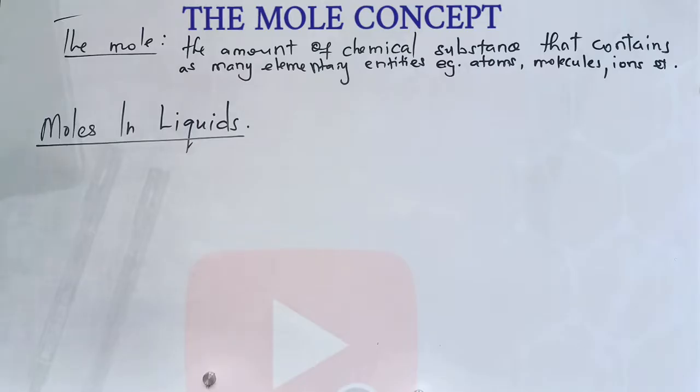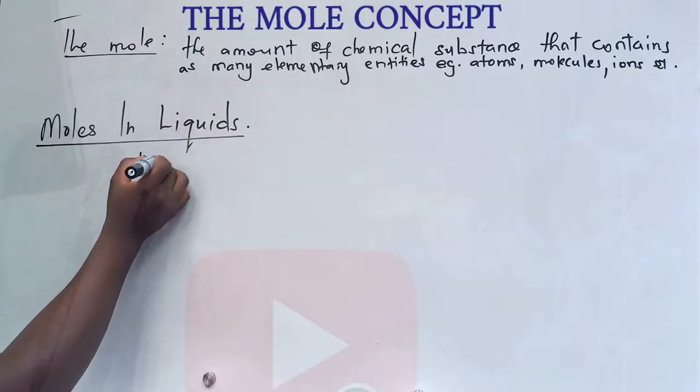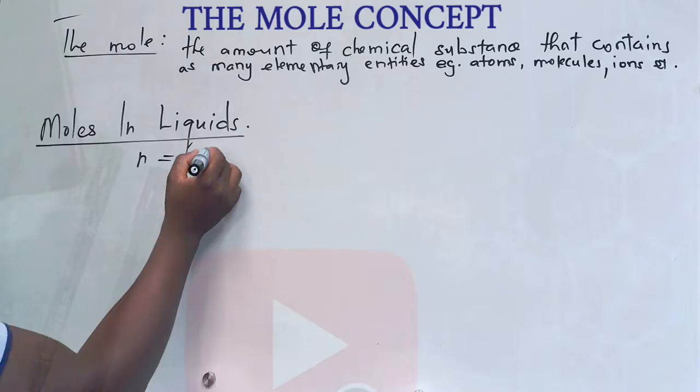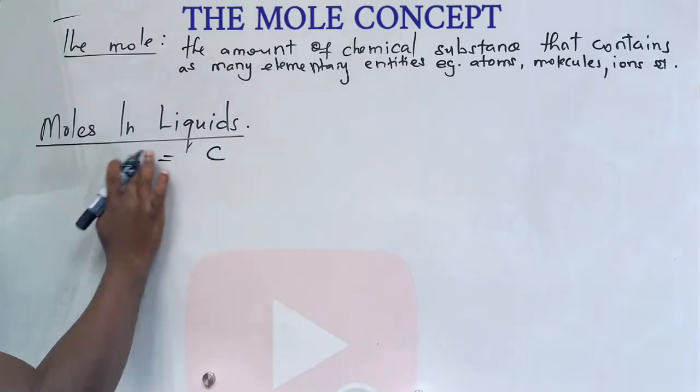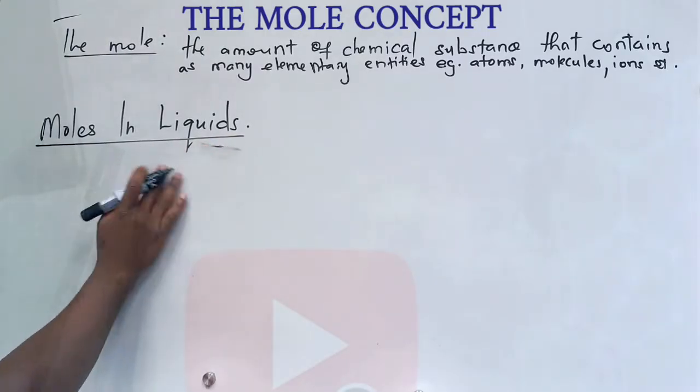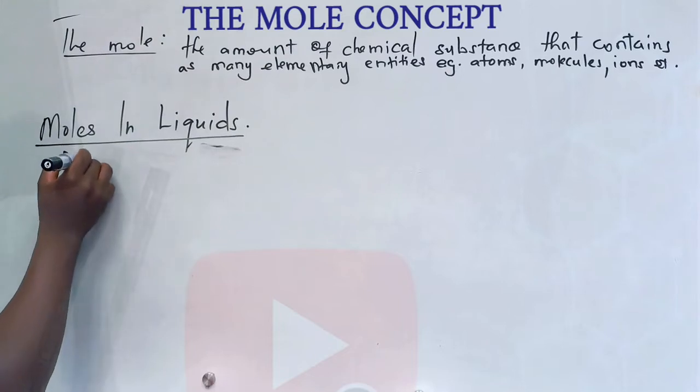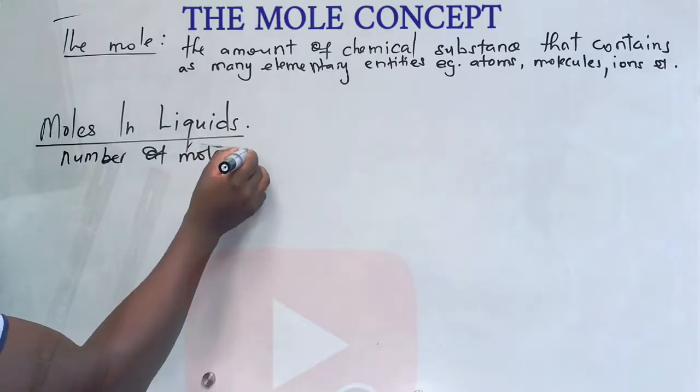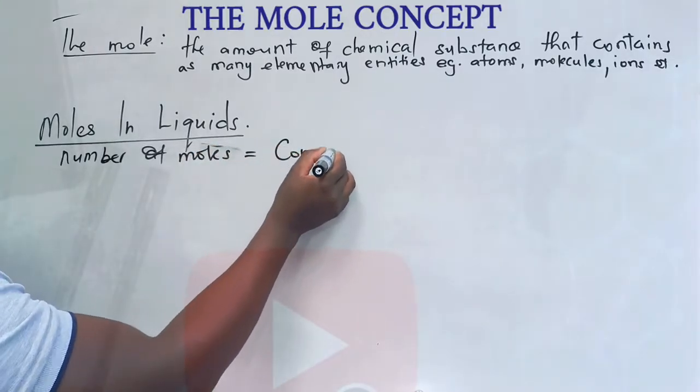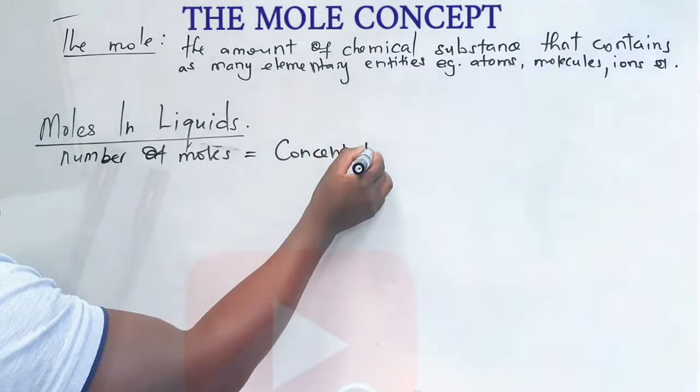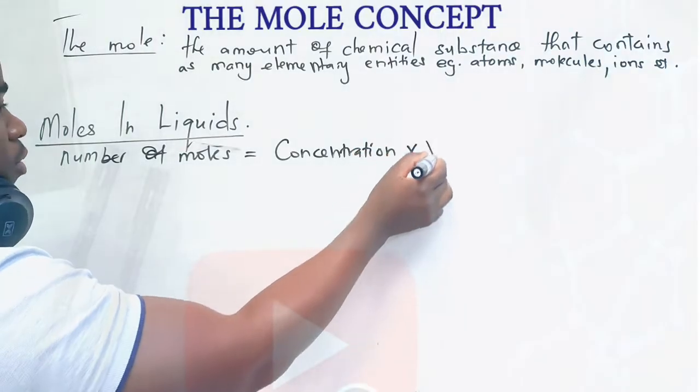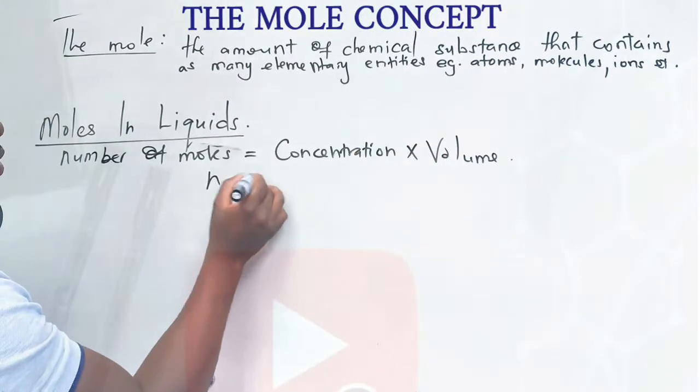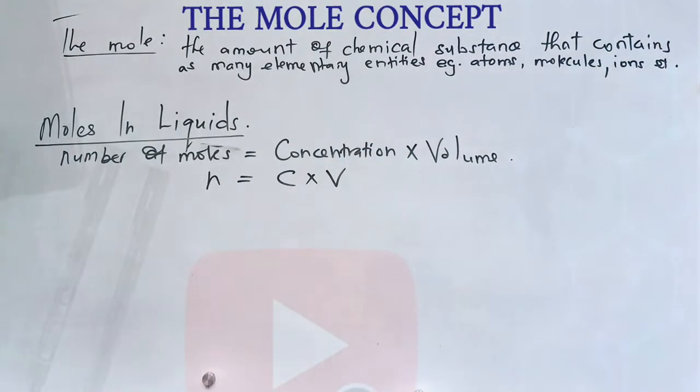So the formula that we are going to use: number of moles is equal to concentration. Let me write it in full first, then I will write it in short. Number of moles is equal to concentration times volume. In short, n is equal to C times V, or CV.